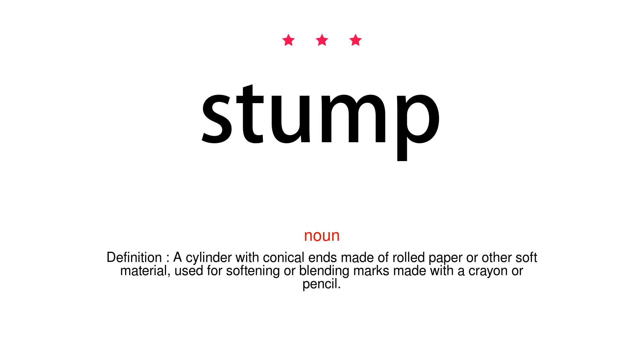Noun. Definition: A cylinder with conical ends made of rolled paper or other soft material, used for softening or blending marks made with a crayon or pencil.